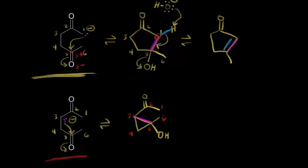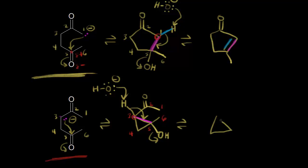We could think about hydroxide coming along and functioning as a base — hydroxide is going to take this proton, leave these electrons behind, and then we have hydroxide as a leaving group. Another possible product would be this three-membered ring with a methyl group and a ketone. We already formed a carbon-carbon bond with the electrons in magenta, and then if we take this proton, these electrons in blue could move in to form our double bond. It turns out that this small ring is possible to form, but it's not isolated in large yield because there's too much angle strain for this three-membered ring.